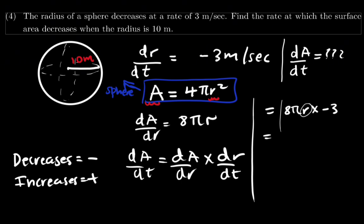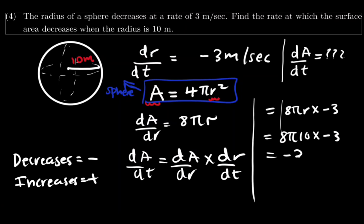Substituting the radius of 10: dA over dt equals 8 pi times 10 times negative 3. When we multiply this, we get negative 240 pi, and the unit is meter squared per second.